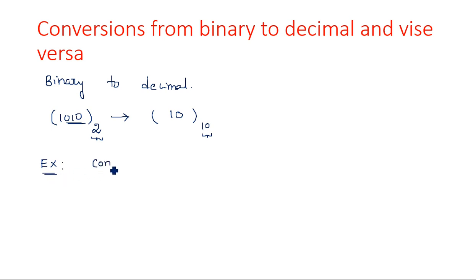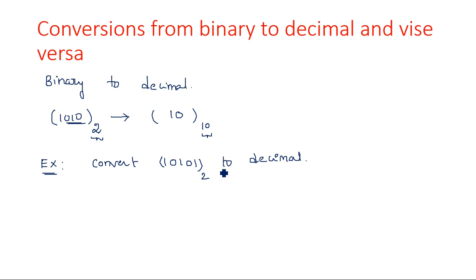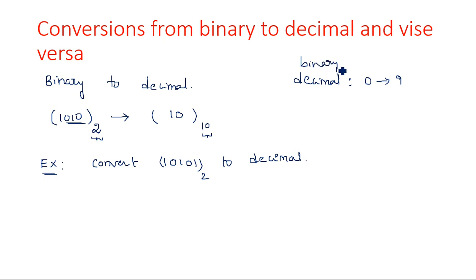Let us consider an example: convert 10101 to decimal. You can identify a binary number if it is having only ones and zeros. Decimal means a range of 0 to 9 — total 10 numbers, with the highest being 9. Binary means only 0 and 1.